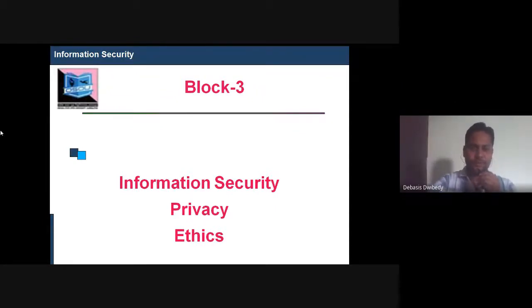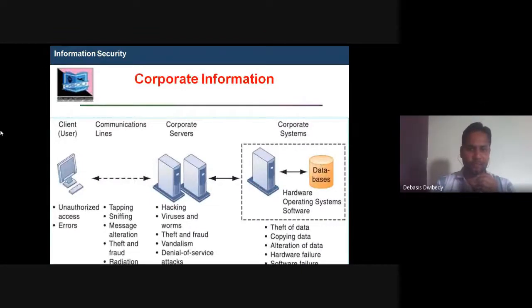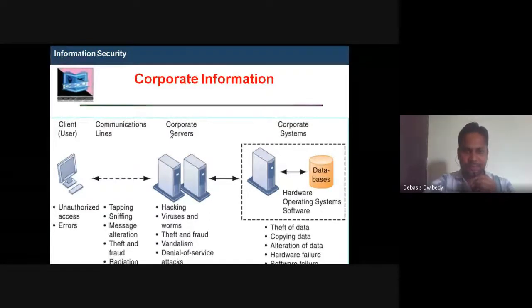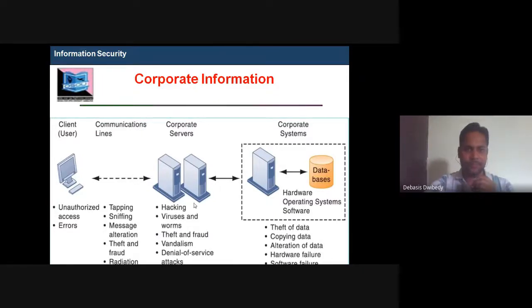Before going to information security, let us try to understand how information plays a vital role in today's computation and today's world. Let us take an example of a corporate network — say a YouTube server or a Google server. In YouTube, there are two types of servers. One is a public server, facing towards the public, meaning anyone connected to the internet can access it. There are also some private servers, intended only to store data of private employees.